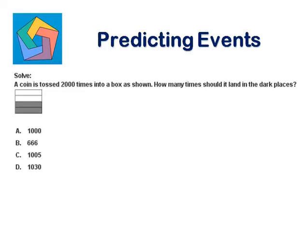Solve. A coin is tossed 2000 times into a box as shown. How many times should it land in the dark places?